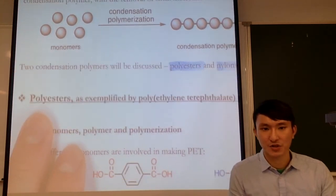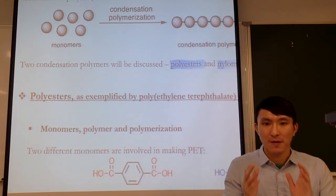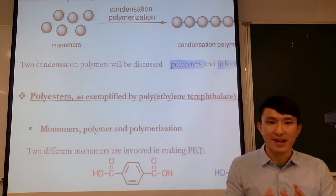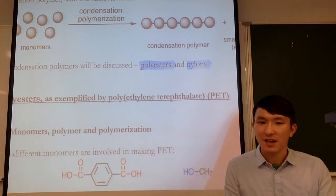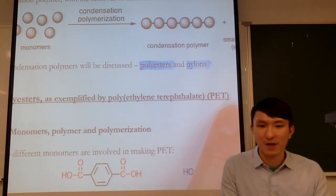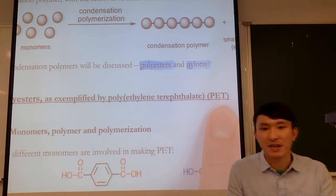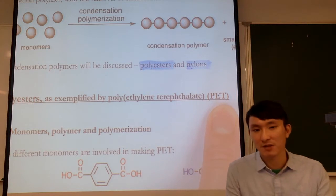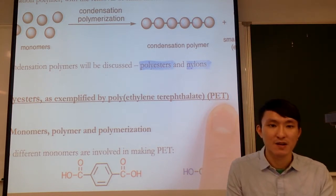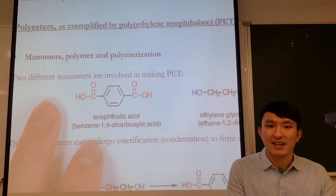Polyester is not a single compound — it is a class or family of polymers. One example is polyethylene terephthalate, PET. Some of you may have seen PET printed on water bottles. This plastic is commonly used for water bottles and has other applications, but most importantly it is an example of a condensation polymer and a polyester.